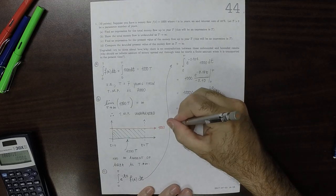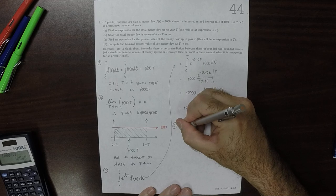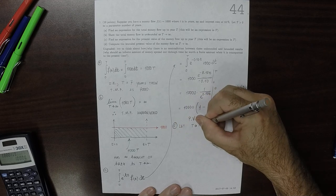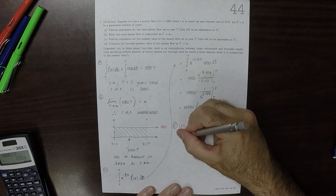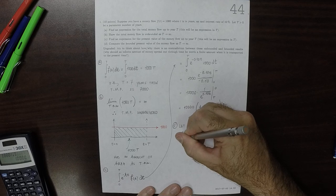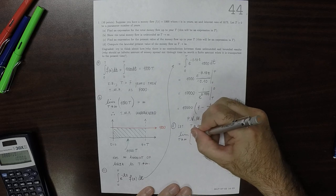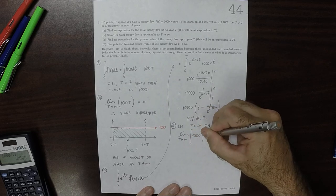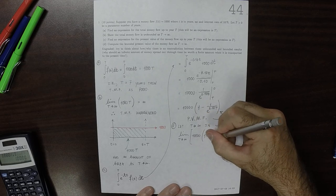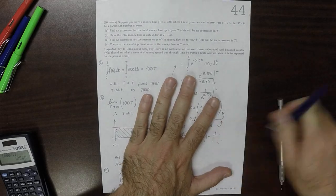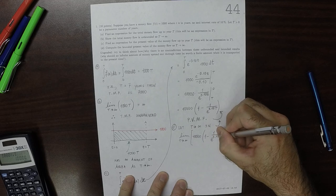So now, for part D, now we're going to let T go to infinity in this expression. The limit as big T goes to infinity of that thing, so 10,000 times 1 minus 1 over exponential 0.10 big T.